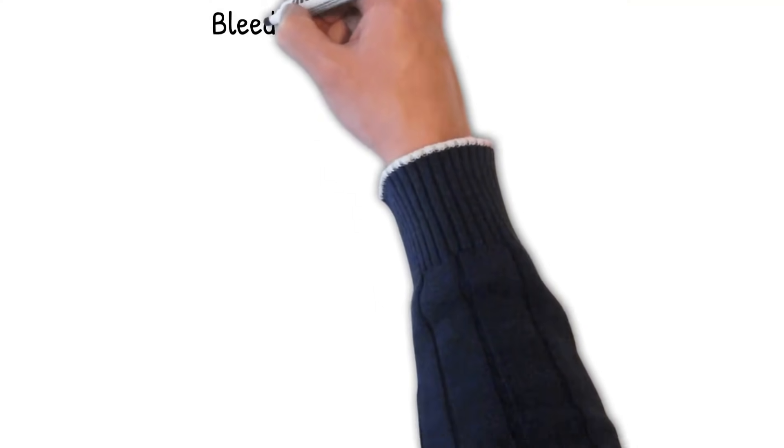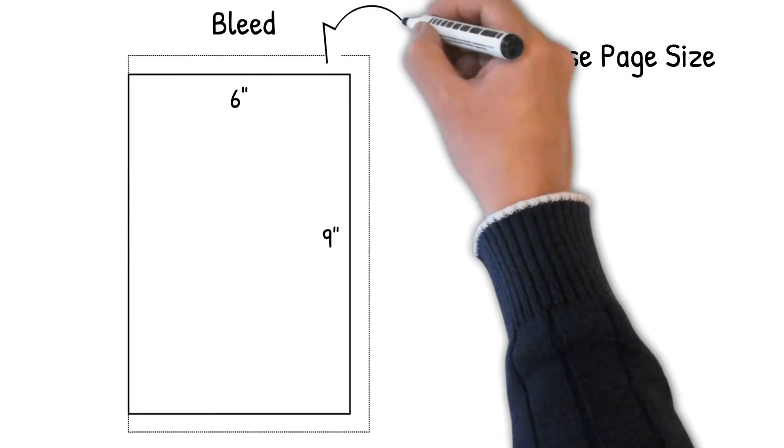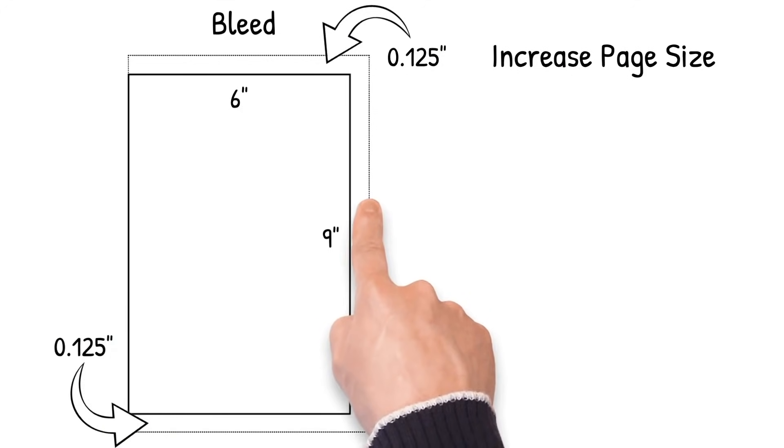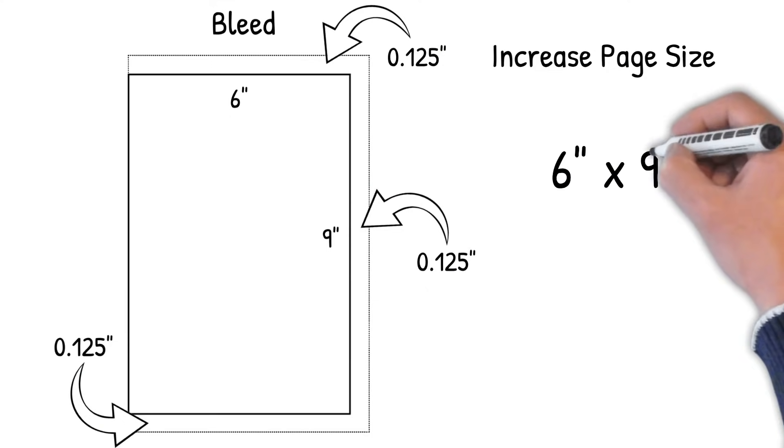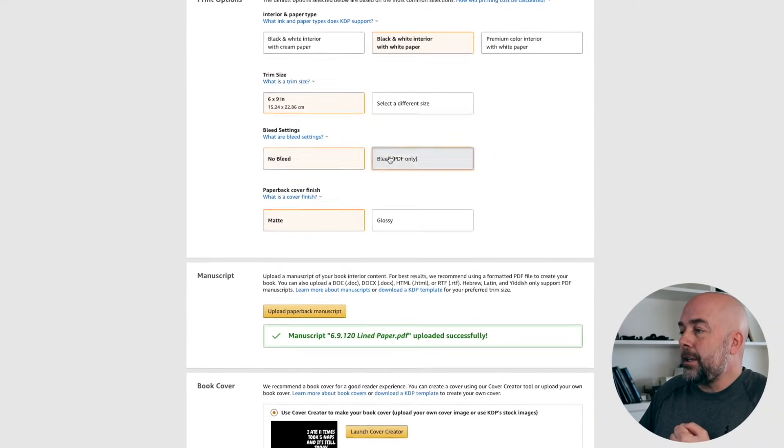If the document does have bleed, we need to increase the page size so that during manufacture it can be trimmed down. If you're placing images or graphics that go to the edge of the page, remember some of that may be trimmed off. To add bleed, we add 0.125 inches to the top, 0.125 inches to the bottom, and 0.25 inches to the side — making our page 6.125 inches by 9.25 inches. You would add this same amount whether your book is 8.5 by 11, 5 by 8, or any other size. When uploading your book, this is where you select the bleed or no-bleed settings.